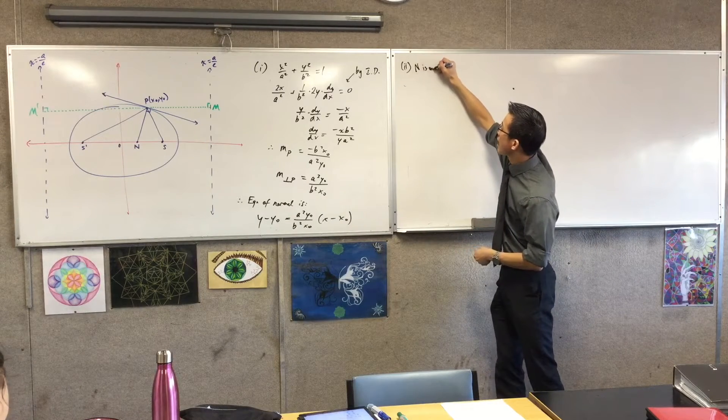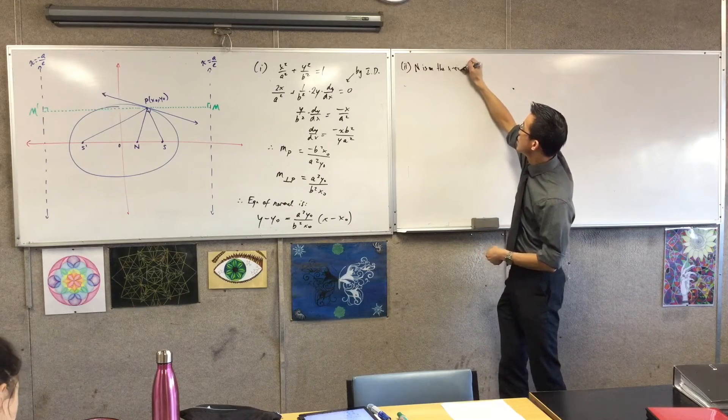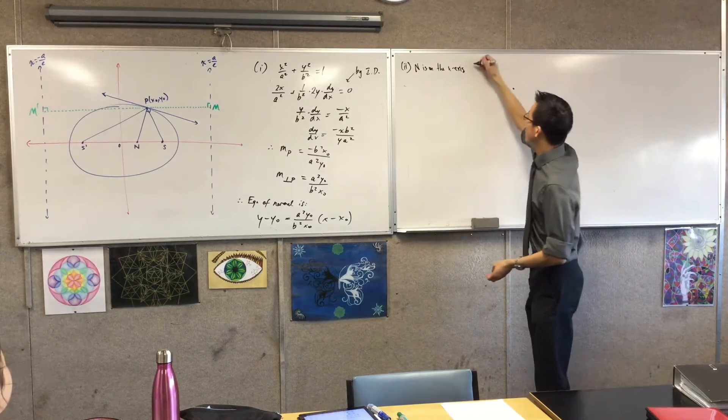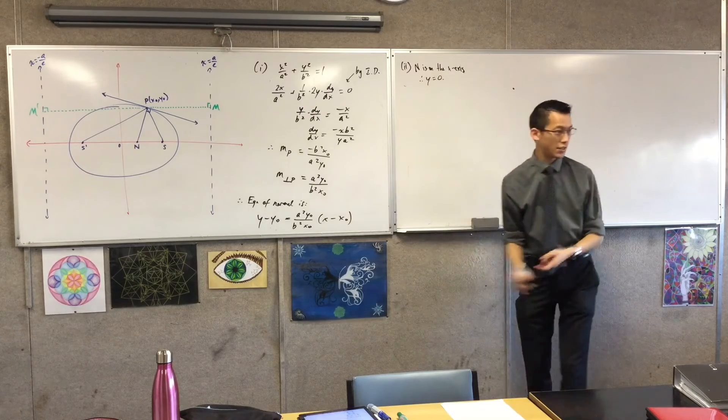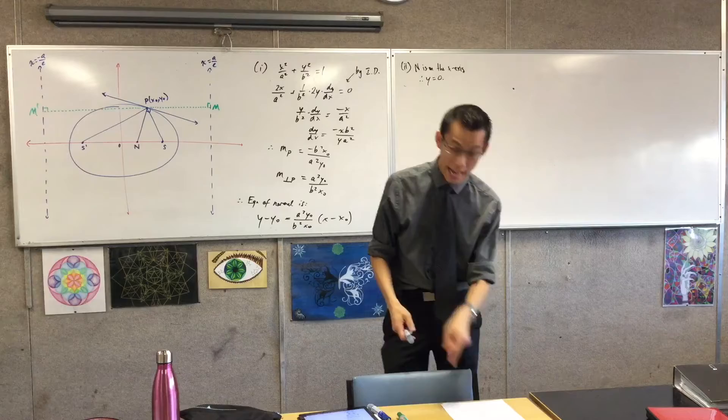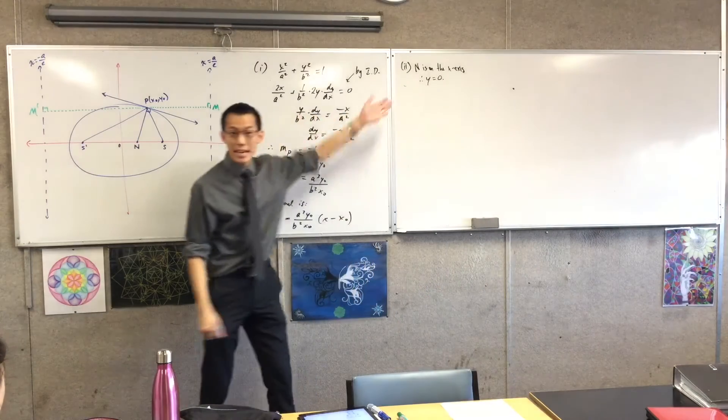So therefore, if I've got the equation of this line, that line that n is on, right, what do I need to do with this equation in order to get the coordinates? Yeah, very good. So I'm going to say n is on the x-axis.